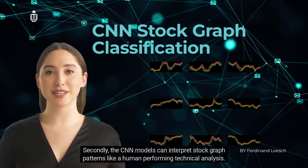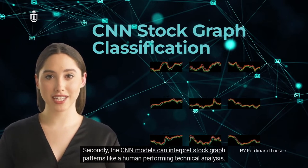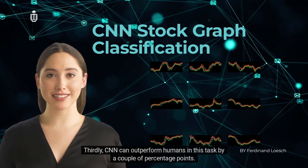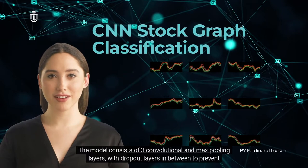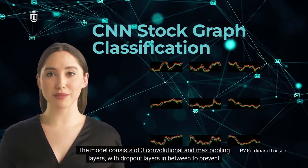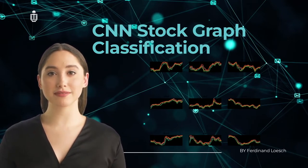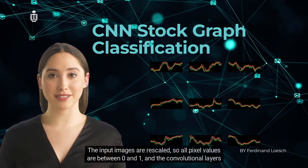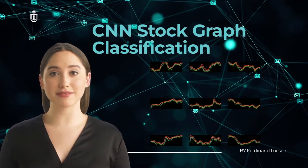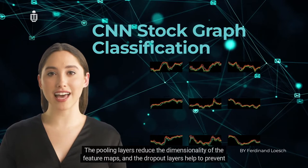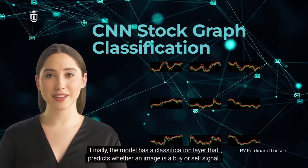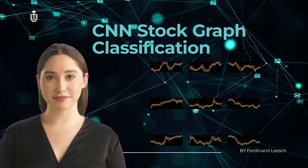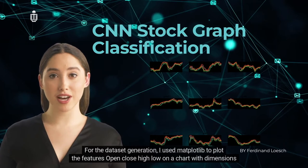Using CNN models for this task offers several benefits. Firstly, CNN models are well-researched with explainable AI techniques. Secondly, they can interpret stock graph patterns like a human performing technical analysis. Thirdly, CNNs can outperform humans at this task by a couple of percentage points. The model consists of three convolutional and max pooling layers with dropout layers in between to prevent overfitting. Input images are rescaled so all pixel values are between zero and one, and the convolutional layers extract features while pooling layers reduce dimensionality.